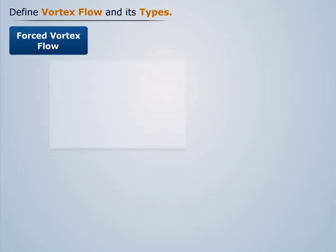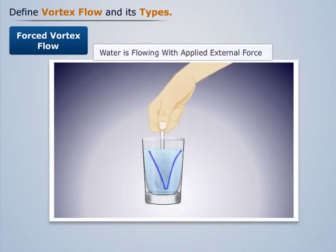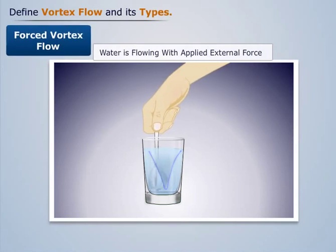To understand forced vortex flow, let us consider a glass of water. When we stir this water with a spoon, we see that water moves in a curved path in the glass. Such flow of water, because of stirring, is known as forced vortex flow.